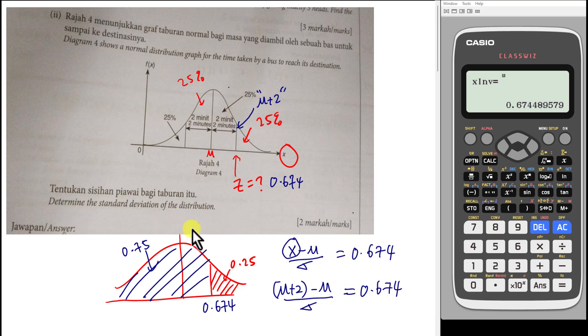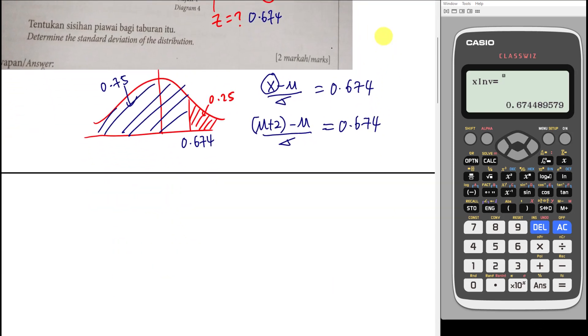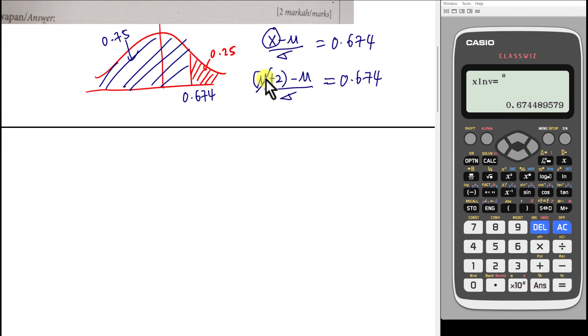I can get the standard deviation they want. So how to solve this one actually is quite simple, right? Because mean and mean, I simplify already. So I know 2 divided by 0.674 will be my standard deviation. So I just type in the calculator, I should be able to get the answer immediately. 2 divided by 0...